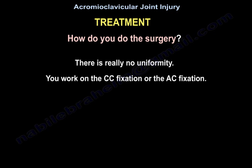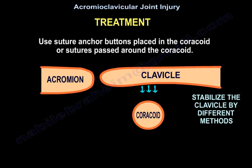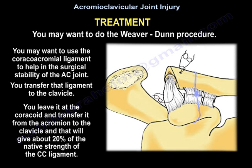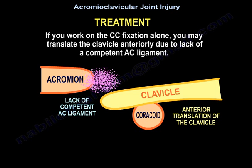There is no uniformity in surgical technique. You can work on CC fixation or AC fixation. For CC fixation, suture anchor buttons are placed in the coracoid, or sutures are passed around the coracoid. You may also use the coracoacromial ligament to help with stability — it is transferred from the acromion to the clavicle, providing about 20% of the native strength of the CC ligament. Working on CC fixation alone may translate the clavicle anteriorly due to lack of a competent AC ligament.